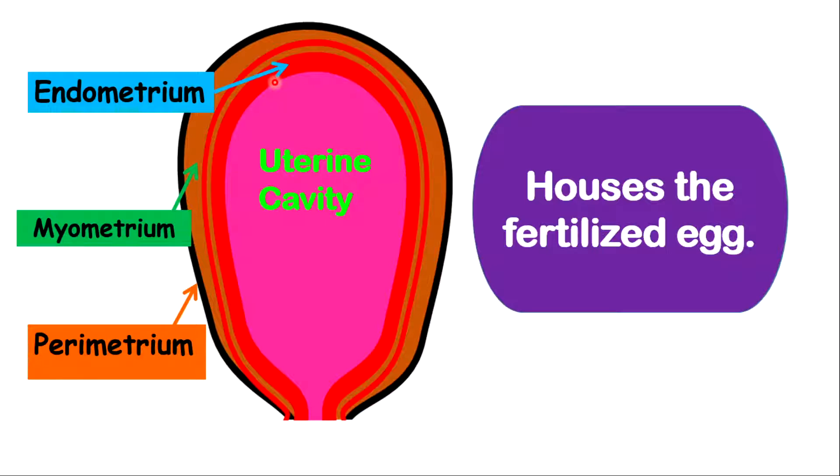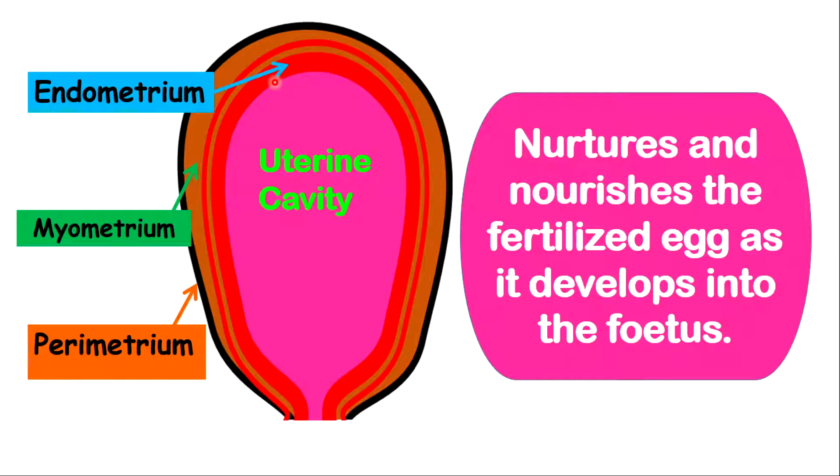So therefore, it houses the fertilized egg for developmental purpose. The uterus is also important because it nourishes and nurtures the fertilized egg as it develops into the fetus. In fact, what will happen in the uterus, you will have the placenta being formed. The placenta will be connected to the fetus by an umbilical cord. The placenta that will form in the uterus will be serving as a filtering organ that will filter substances from the mother and send them into the fetus that are needed for development. I'll go into more details when I'm looking at fertilization and pregnancy.